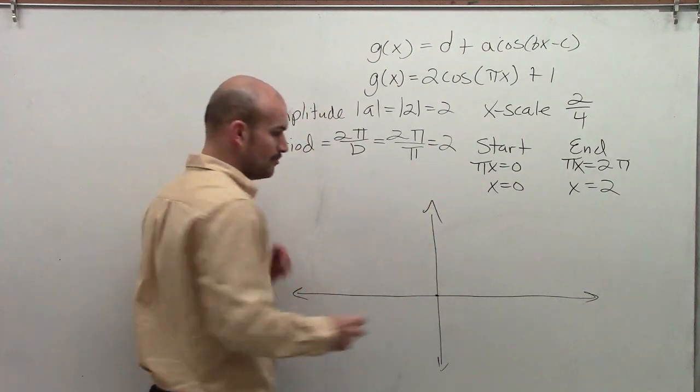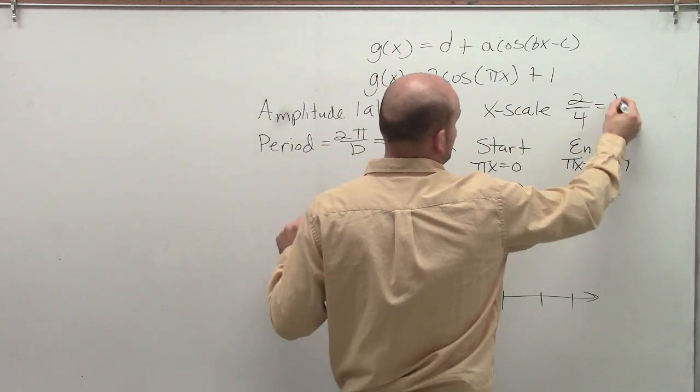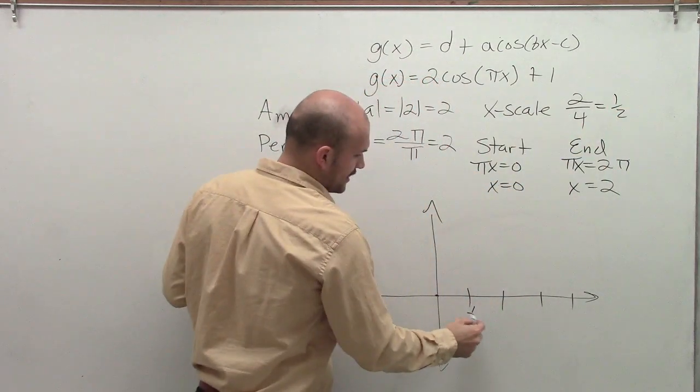Then remember, there's four critical points. Between those four points is 1 half. That means my first critical point is going to be at 1 half.